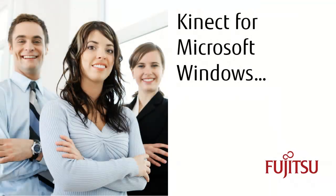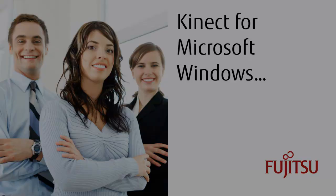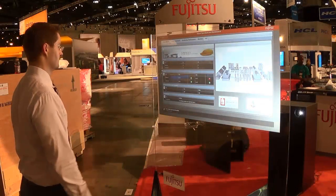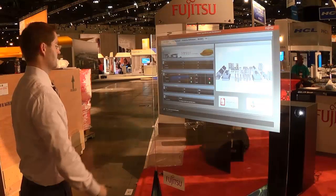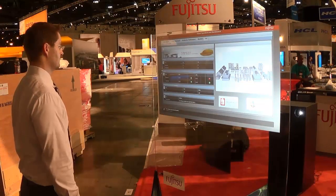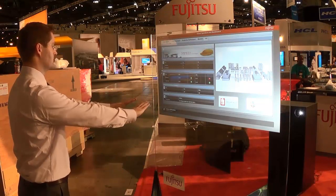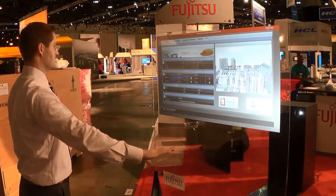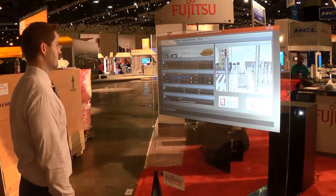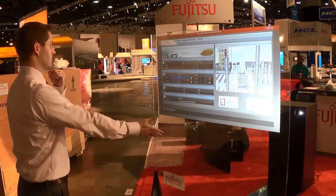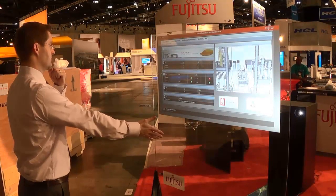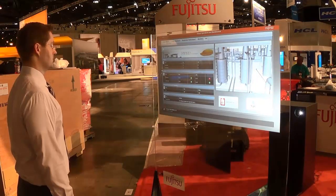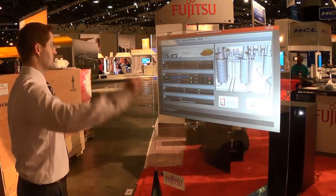The Fujitsu Innovation solution also includes a Microsoft Kinect device. Just stand in front of the glass and raise your hands. To zoom in on a refinery, begin with your hands in a diamond shape and slowly pull them apart. We can pan by showing our palm, and even reset the image from a 3D perspective.